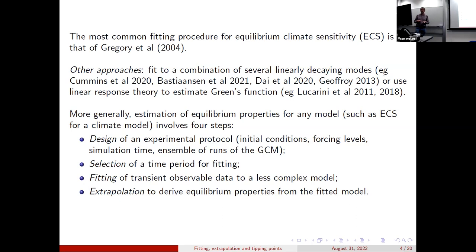You need to design an experimental protocol. How many samples are you going to do? How many runs? What are the simulation times? What forcing levels are you going to do? What initial conditions? Once you've done those runs, and of course there's a lot of computation, you then need to select which time period you're going to fit to. So you might think, well, you fit to all the data. That's the best thing. But actually, that's not what happens. Typically, you ignore little transients that appear at the beginning. Then you do your fitting and then you do the extrapolation. Of course, that's where the problem is. There's nothing that's really going to guarantee that your extrapolation is necessarily going to work.